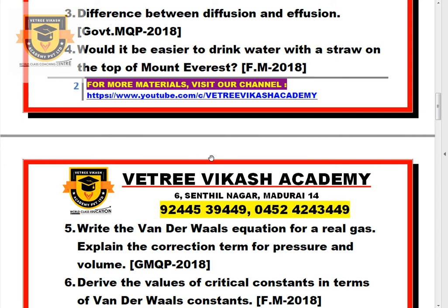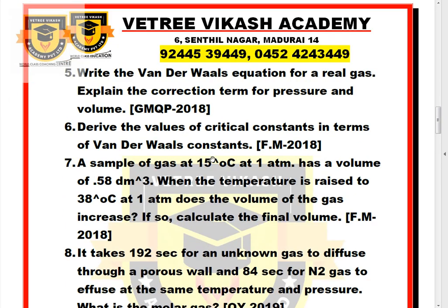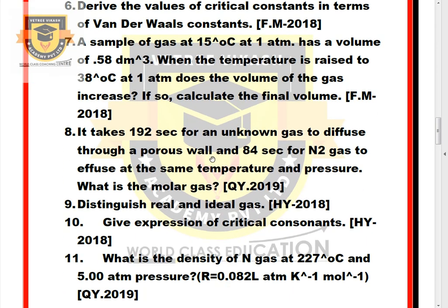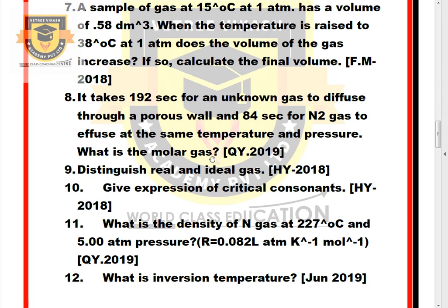Question 5: Write the Van der Waals equation for a real gas. Explain the correction term for pressure and volume. Question 6: Derive the values of critical constants in terms of Van der Waals constants. Question 7: A sample of gas at 15 degrees Celsius at 1 atm has a volume of 58 dm³. When the temperature is raised to 38 degrees Celsius at 1 atm, does the volume of the gas increase? If so, calculate the final volume.